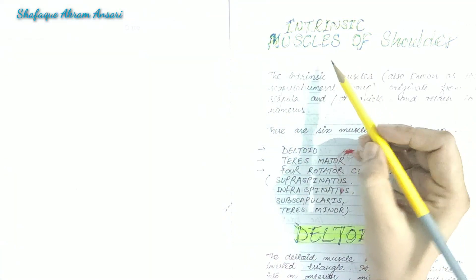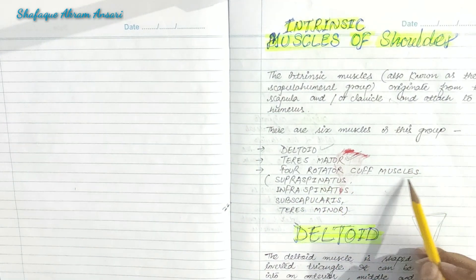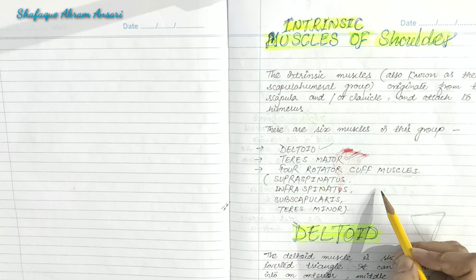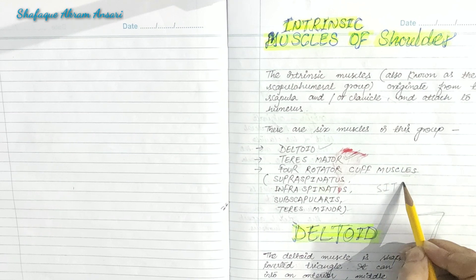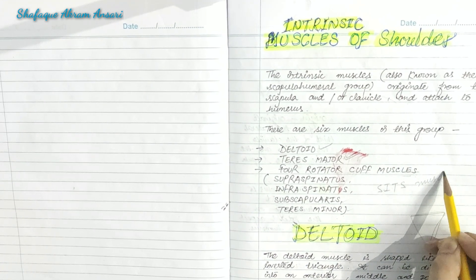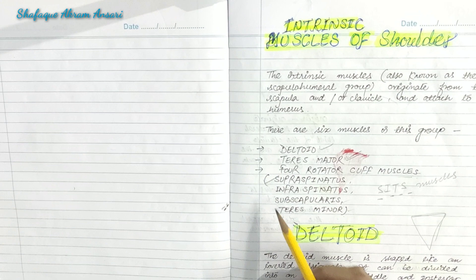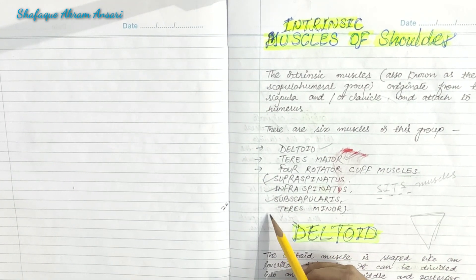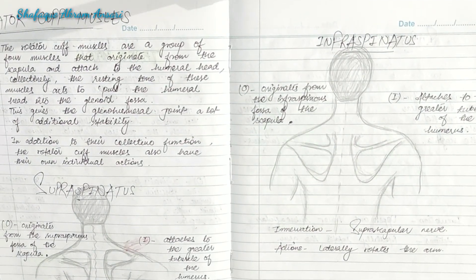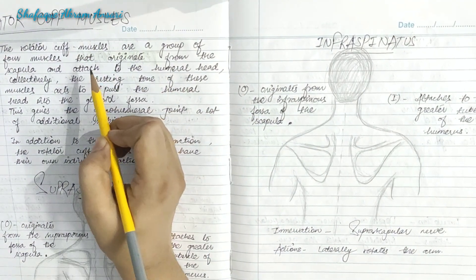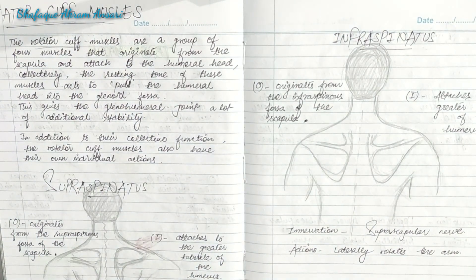In the intrinsic muscles of the shoulder, we have already learned the deltoid and teres major. Today we will cover the rotator cuff muscles. The rotator cuff muscles are sometimes referred to as the SITS muscles — each letter stands for one of the muscles in this group: Supraspinatus, Infraspinatus, Subscapularis, and Teres Minor.